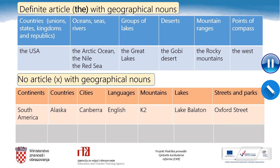The article 'the' is also used before countries whose names are plural in form, like the Netherlands — please add this country to the list. We use 'the' before the names of oceans, rivers, seas, and groups of lakes, but not before the names of individual lakes. We use 'the' with deserts and mountain ranges, but not with individual mountains. We use 'the' with points of compass. Do not use 'the' before the names of continents, countries and cities. However, there is a famous exception: The Hague.